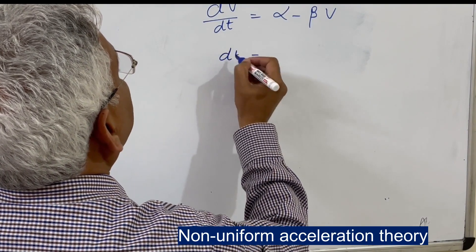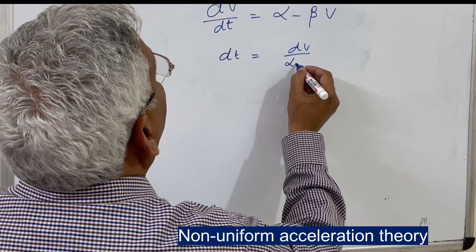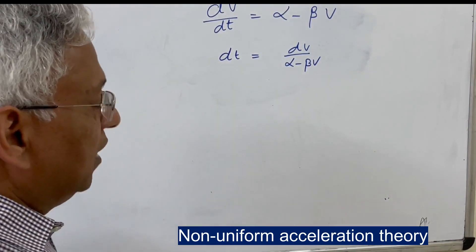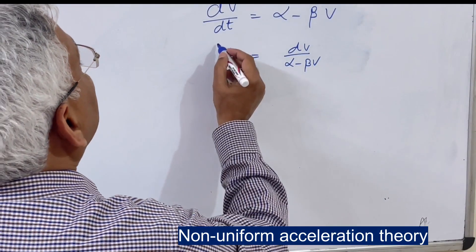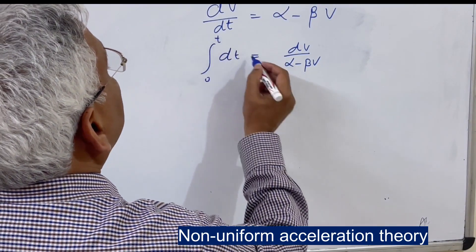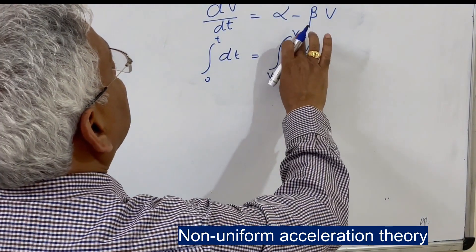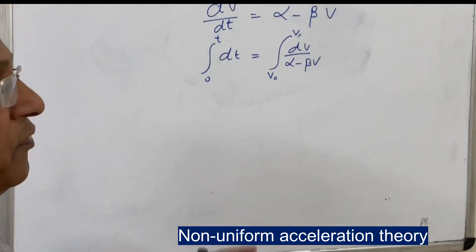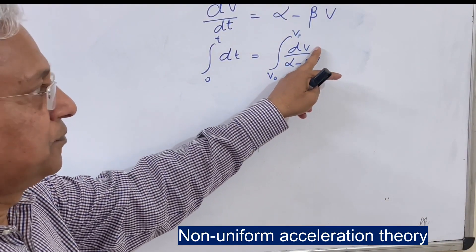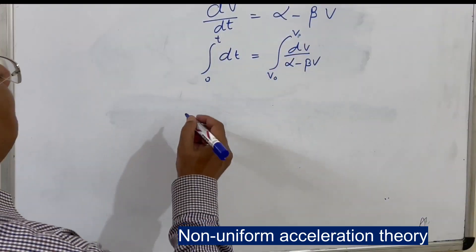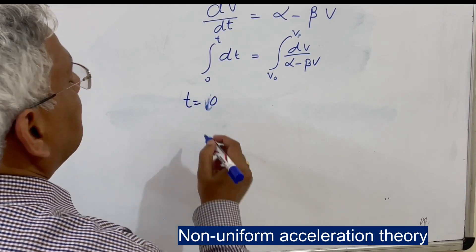From dv/dt = α - βv, we can write dt = dv/(α - βv). Integrating this equation from 0 to t on the time side and from initial velocity v₀ to final velocity v on the velocity side, we can find the time required to reach speed v given the constants α and β.